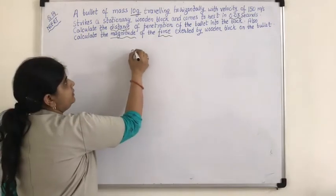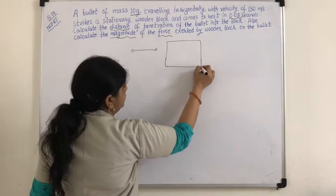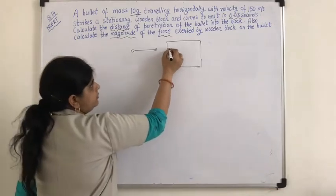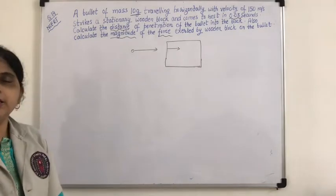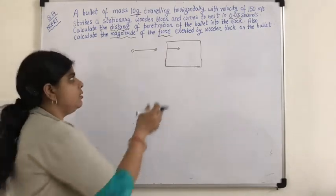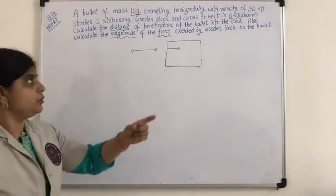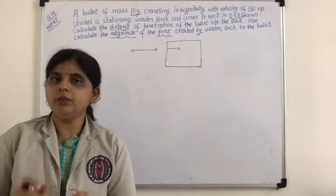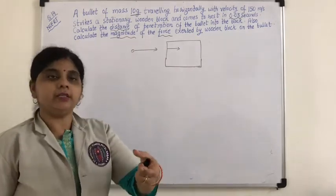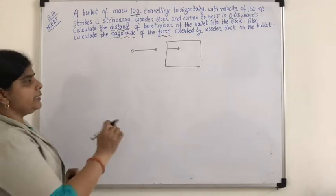A bullet is traveling and it penetrates a wooden block. The question is: when it penetrates the wooden block, how much distance does it travel before coming to rest? How much distance is traveled by the bullet in the wooden block, and what is the magnitude of force exerted by the wooden block on the bullet? That is what we have to find out.